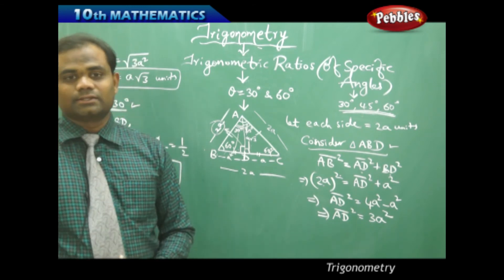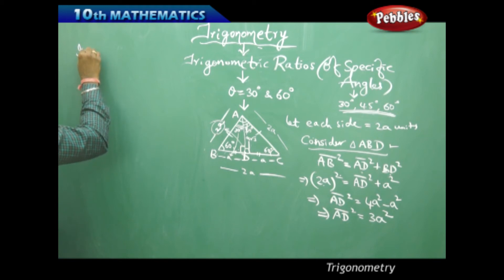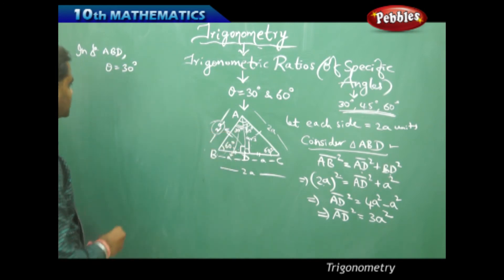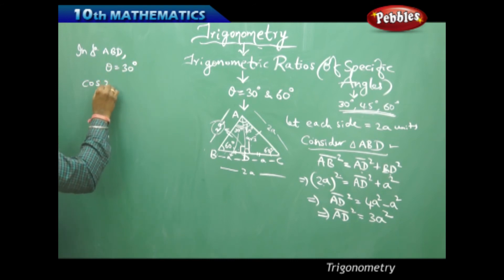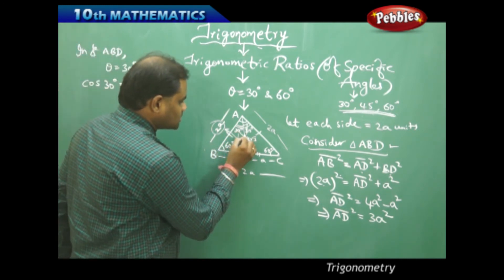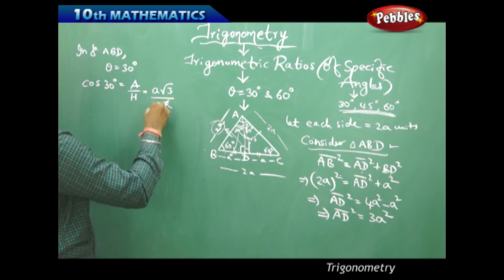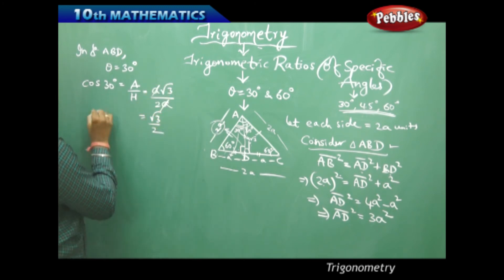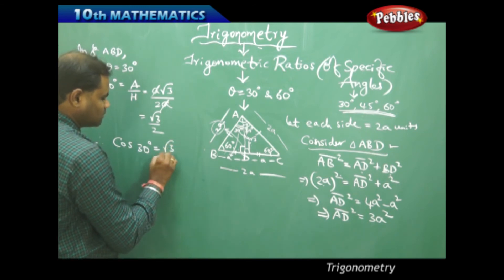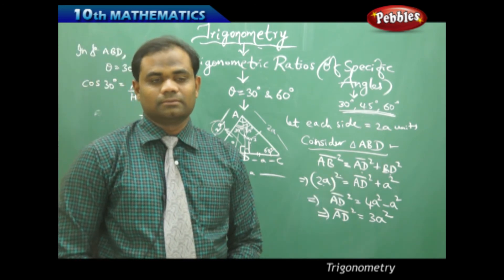Similarly, for cos 30° in triangle ABD, cos 30 = adjacent/hypotenuse. The side adjacent to 30° is AD = A√3, and the hypotenuse is AB = 2A. Therefore, cos 30 = A√3/2A = √3/2.